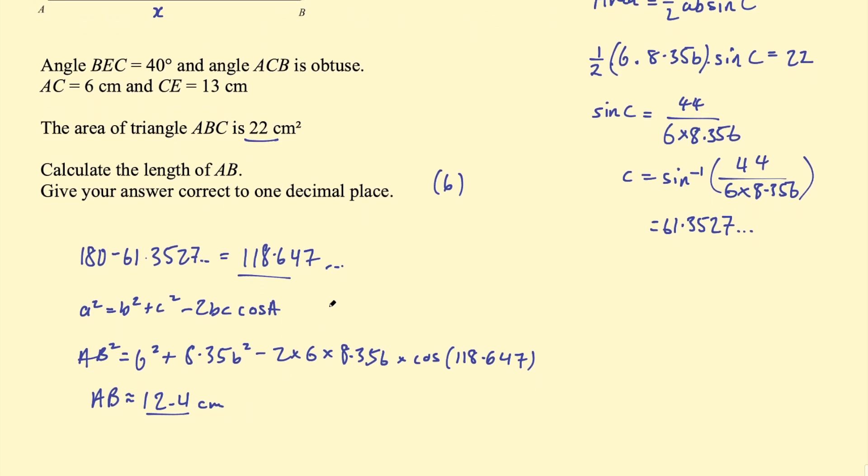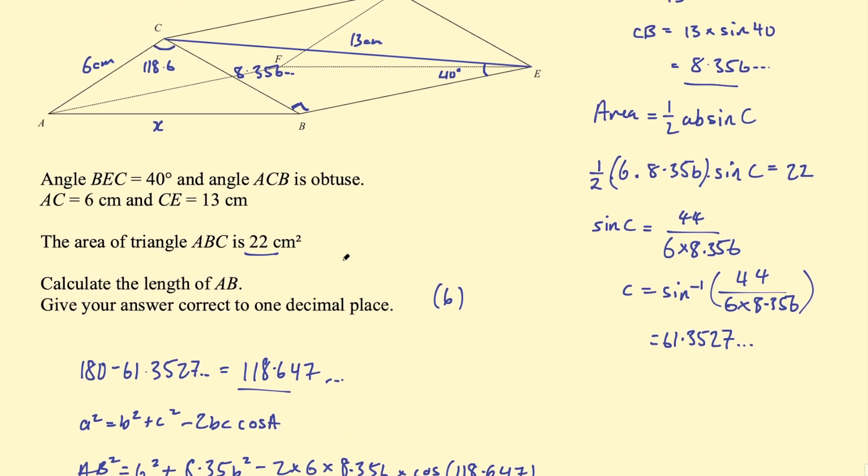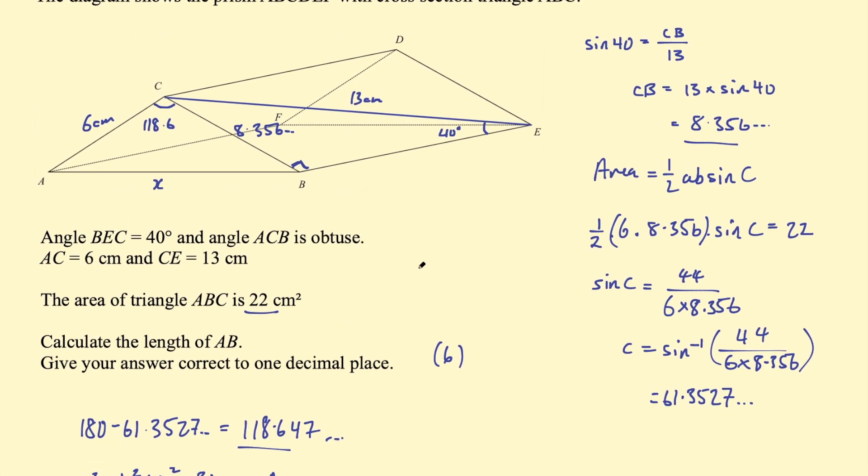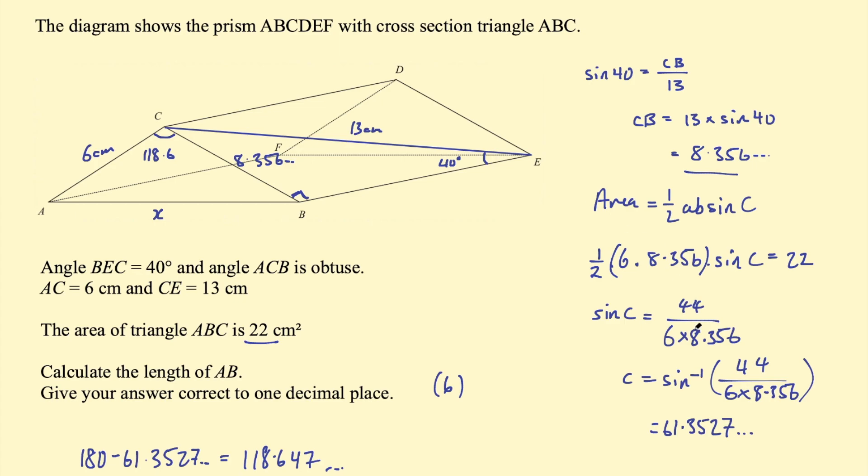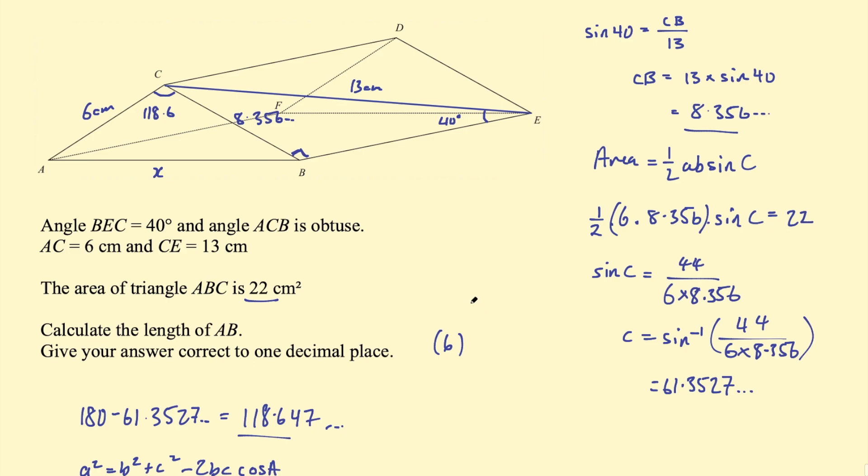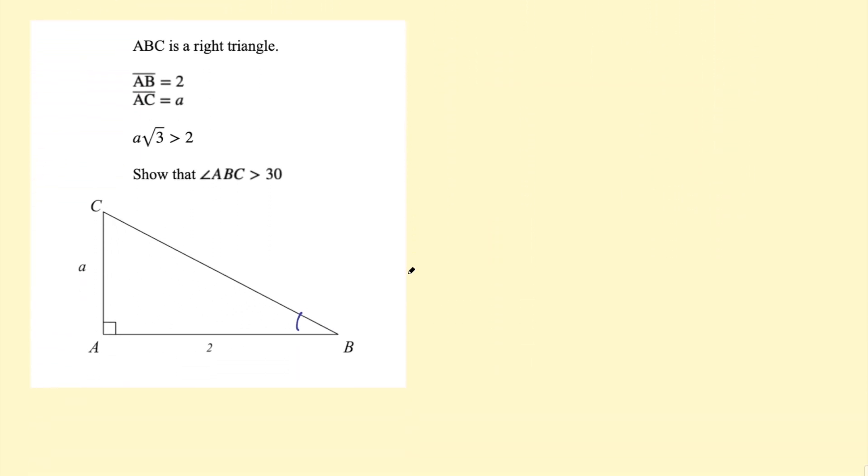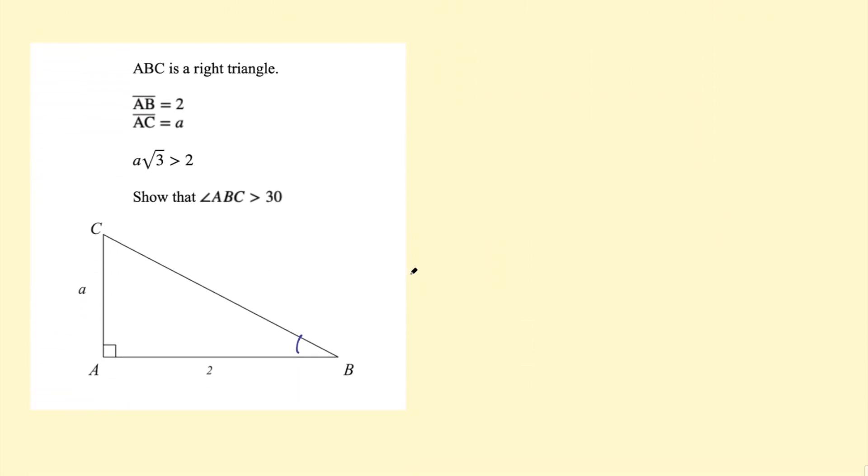So AB, rounded off to one decimal place, is 12.4 centimeters, and that's your final answer there for that question. So the tricky part of that question was firstly recognizing the strategy, and then finding the other solution for the angle, finding the obtuse solution for that angle. Okay, and that was a six-mark question. By the way, on to the question I posted yesterday on my channel. ABC is a right triangle, AB equals 2, AC equals a, a root 3 is greater than 2. Show that the angle ABC is greater than 30.